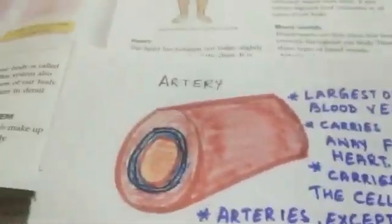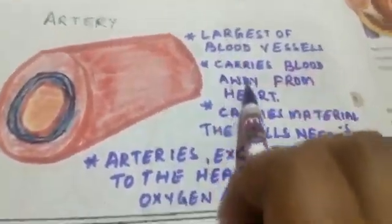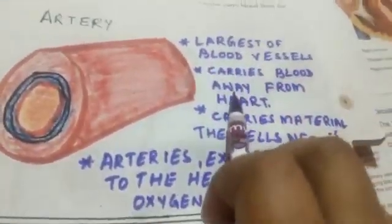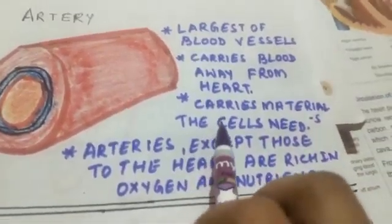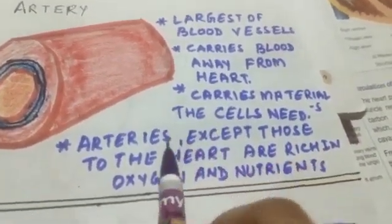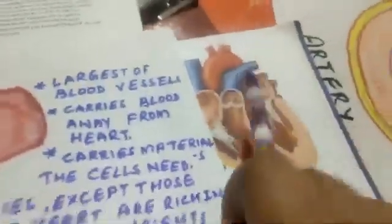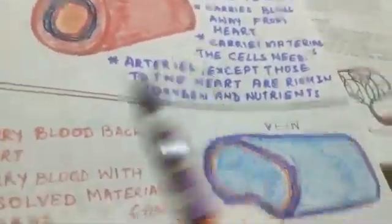Let's revise what we have learned. An artery is the largest blood vessel that carries blood away from the heart, carrying materials that cells need like oxygen and nutrients. Only the pulmonary artery carries impure blood; all the rest carry pure blood.